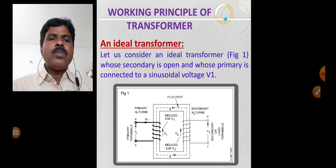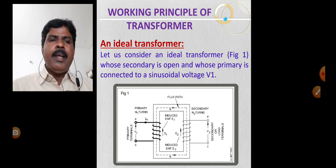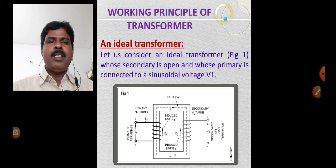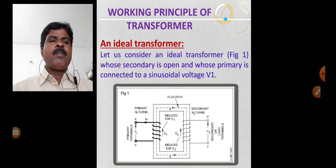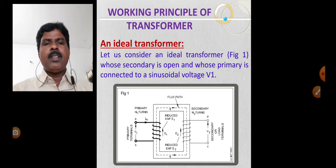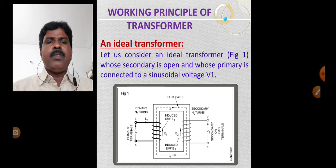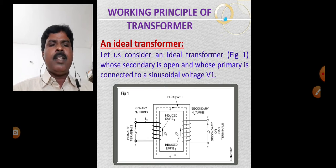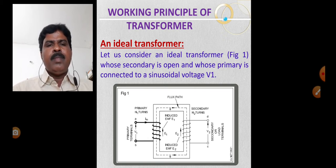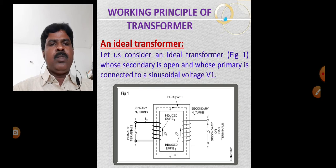Consider an ideal transformer whose secondary is open and whose primary is connected to a sinusoidal voltage V1. If you observe this figure, you can see V1 applied to the primary terminal.